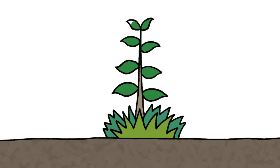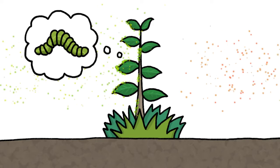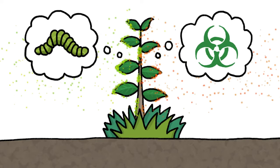Over many generations, eavesdropping plants have evolved to interpret each different combination of compounds as the signature of a specific, imminent threat.